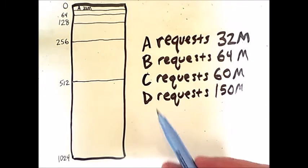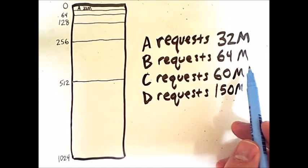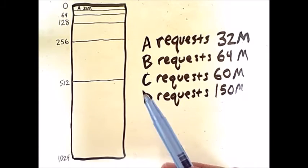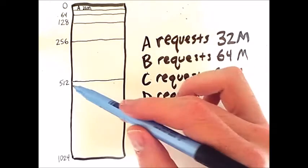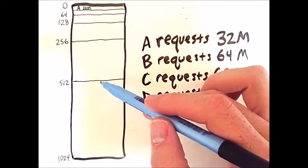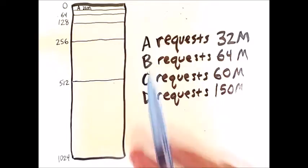Now, the buddy system will handle process B's request for 64 megabytes. We look at the two portions of memory, we realize that 512 is too big, and so we will look up first.